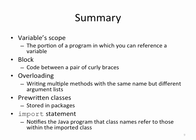To summarize: variable scope refers to the portion of the program in which you can reference that variable. A code block is code within a pair of curly braces — an open brace and a closing curly brace indicates a code block. You can overload a method, which means having a method with the same name but different parameter or argument lists. You can use pre-written classes stored in packages by using the import statement.